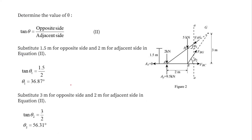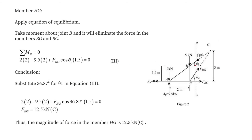Now let's find the angles. For theta 1, the opposite side height is 1.5 m and the base distance is 2 m, so tan(theta1) = 1.5/2, giving theta1 = 36.87°. For theta 2, the total opposite side height is 3 m and the base is 2 m, giving theta2 = 56.31°.